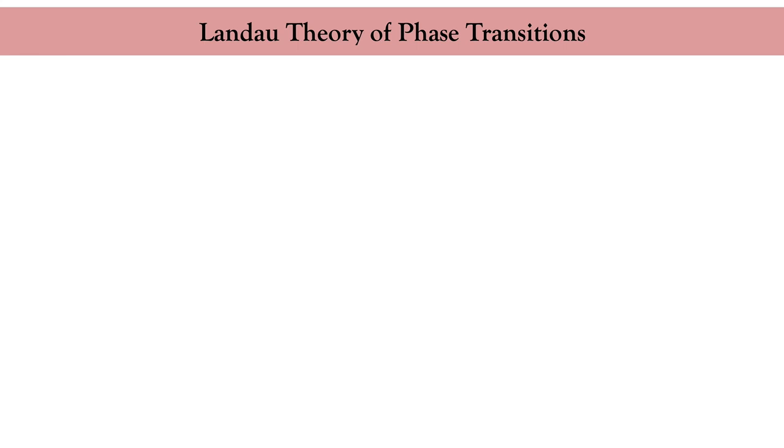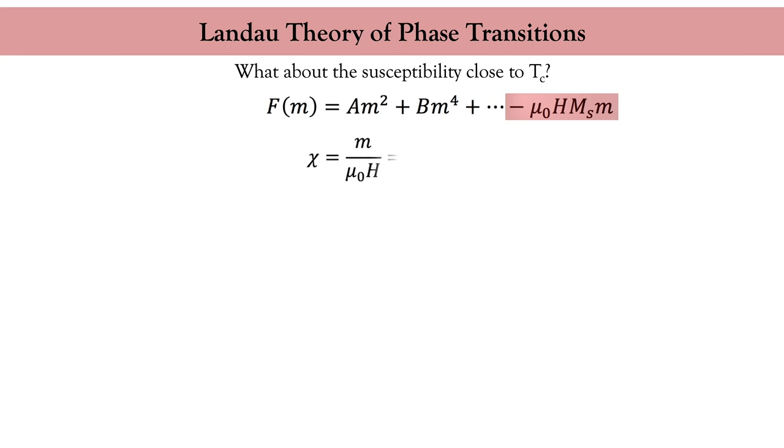Now let's consider the susceptibility. We simply add a Zeeman term to our free energy. Neglecting the quartic term, we obtain the well-known Curie-Weiss law that we obtained already in the previous lecture via the Brillouin formula.